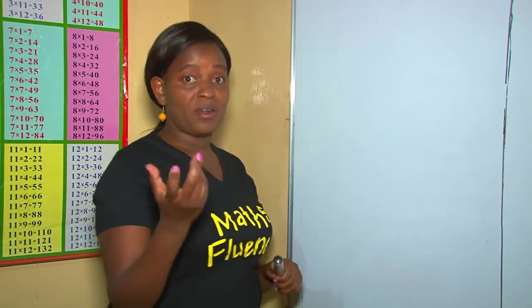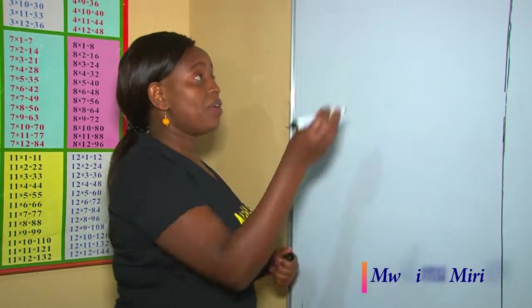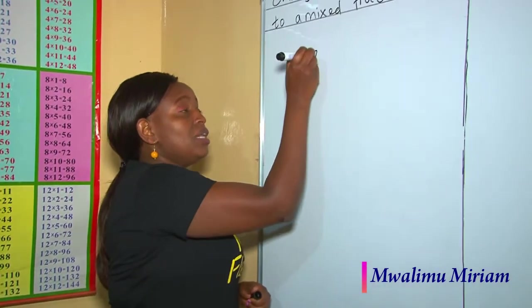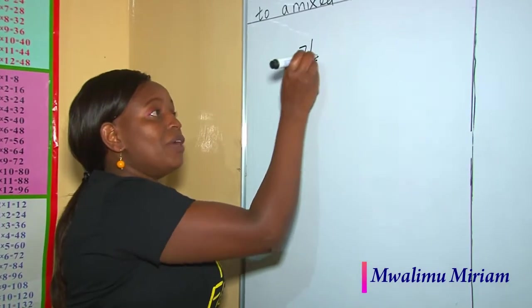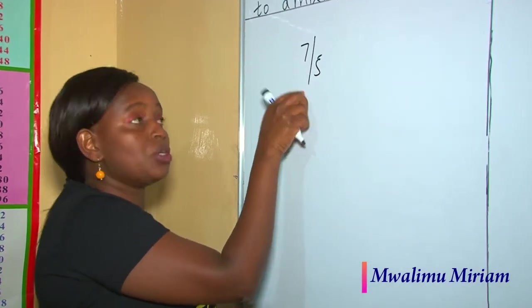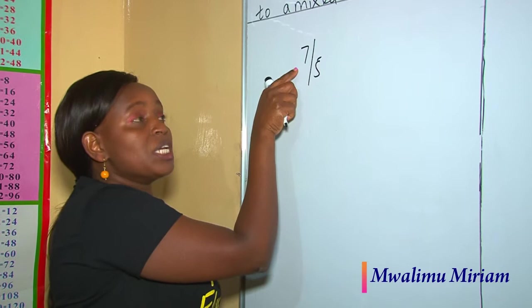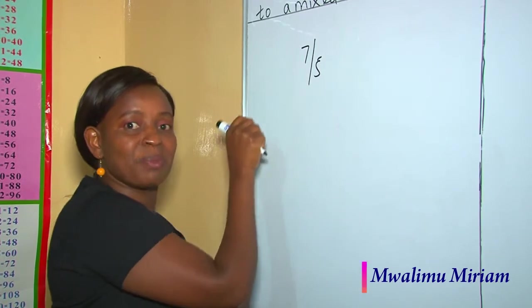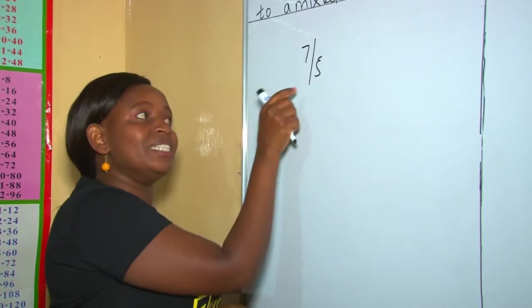Like for instance, if a fraction is 7 out of 5, this is an improper fraction because the numerator is bigger than the denominator.